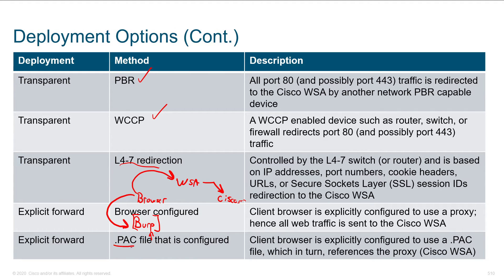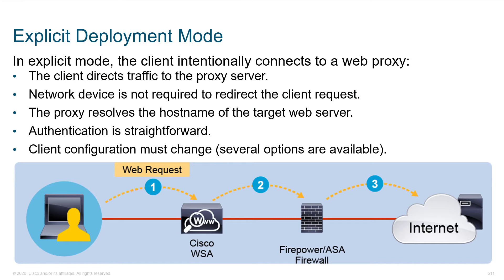Alternatively, we can leverage a file called a PAC file — for configuring the proxy automatically. Those PAC files can be pretty easily deployed. Most endpoints and workstations support the use of a PAC file. The client browser just has a URL inside of it and it says, retrieve this configuration file from this location — the configuration file tells it how to communicate with the WSA. In explicit deployment mode, the client is intentionally connecting to the web proxy, so no additional configuration is needed on switches and routers. It's just between the end user and the WSA.